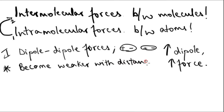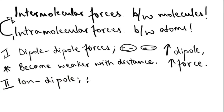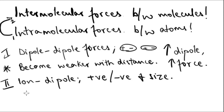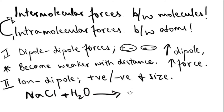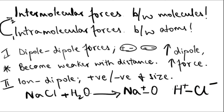Second, we'll speak about ion-dipole forces. This depends on the charge and size of the ion and the magnitude of the dipole. Cations generally have bigger ion-dipole forces because they are smaller in size than anions — they are on the left side of the periodic table. For example, NaCl is an ionic compound that dissolves in water, a polar compound. So the positive ion attracts the negative end, and the negative attracts the positive.